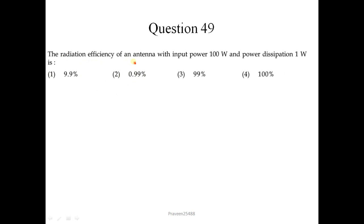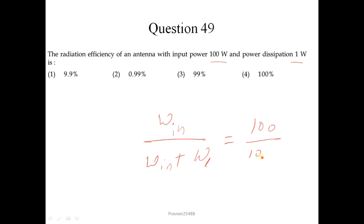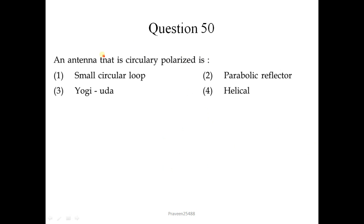Question number 49: The radiation efficiency of an antenna with input power 100 W and power dissipation 1 W is calculated as: input power / (input power + dissipation power) = 100 / 101 ≈ 0.99, so it is 99%. Question number 50: The antenna that is circularly polarized is the helical antenna — correct option is 4.